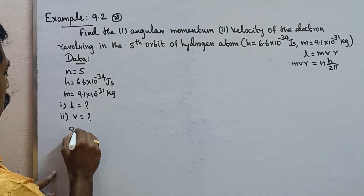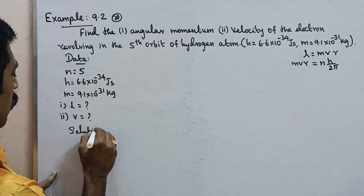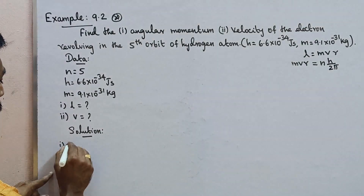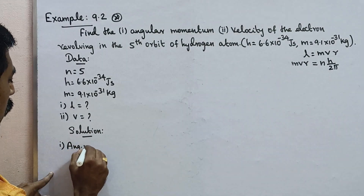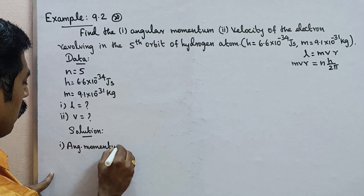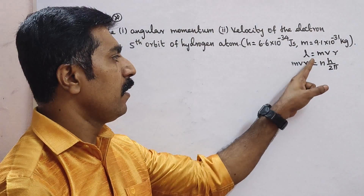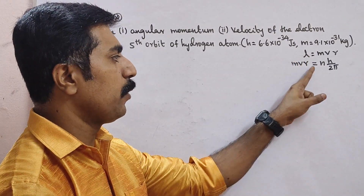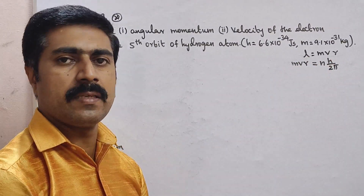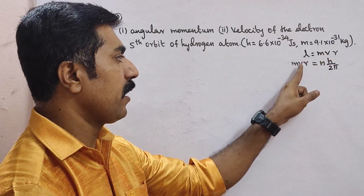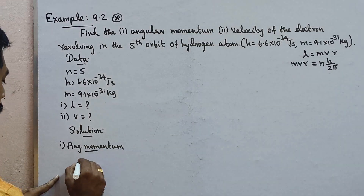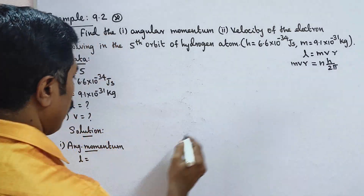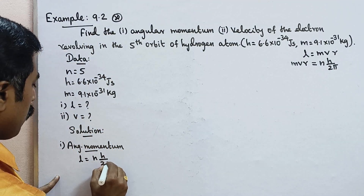Solution. First one - angular momentum. L is equal to nH/2π. So this L is equal to nH by 2π.